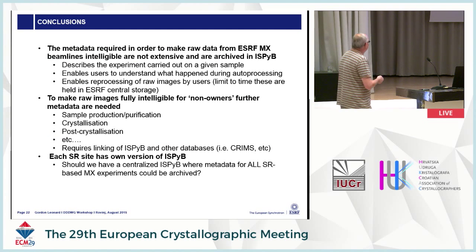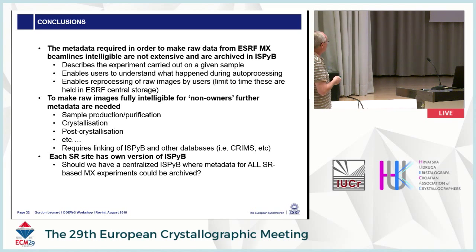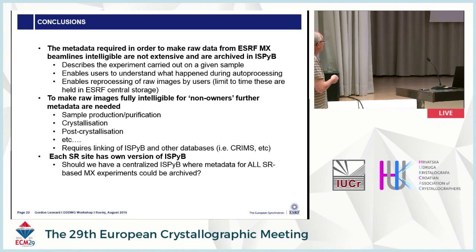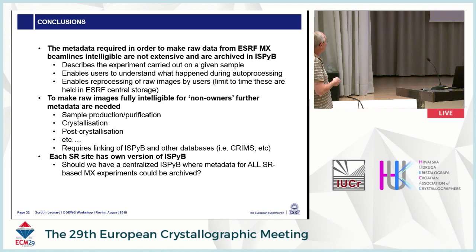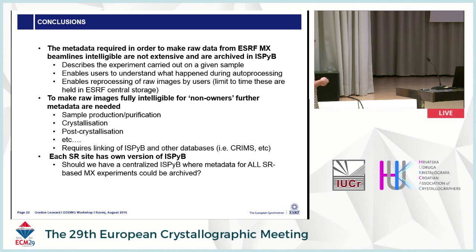So that's basically the end of my talk. The conclusions are that the metadata required in order to make raw data from our beamlines intelligible are not extensive — you don't need that much data, particularly if you're just describing the data collection step. They're archived and retrievable in iSpyB for users. This metadata describes the experiment carried out on a given sample, enables users to understand what's happened during automatic data reduction processes, and enables the reprocessing of raw images by users, although with the caveat that there's a time limit to how long they're held on our servers.